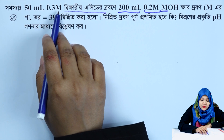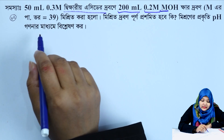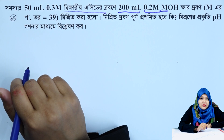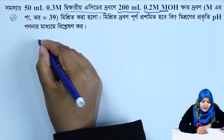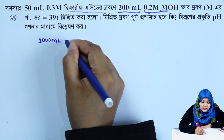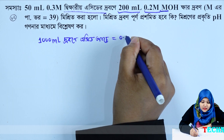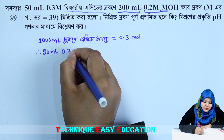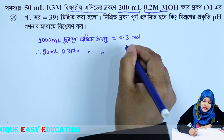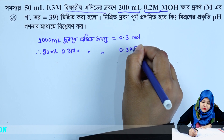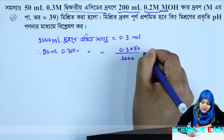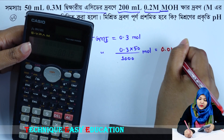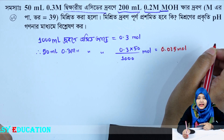First, we can see that 0.3 mol/L is the acid concentration. Every 1 L has 0.3 mol. So for 50 mL: 0.3 mol × 50/1000 = 0.015 mol. So the moles of acid = 0.015 mol.